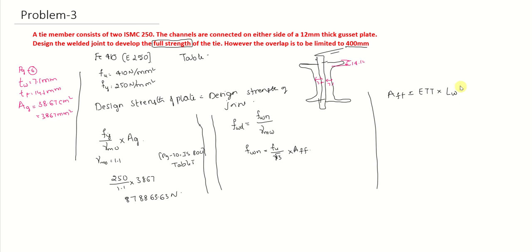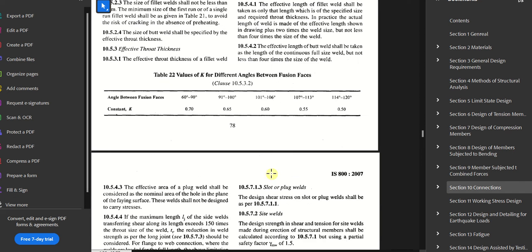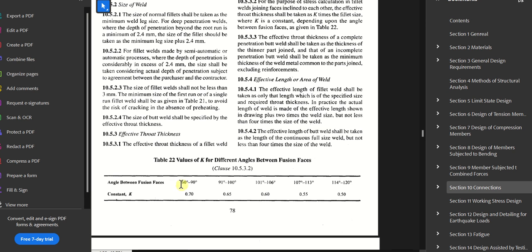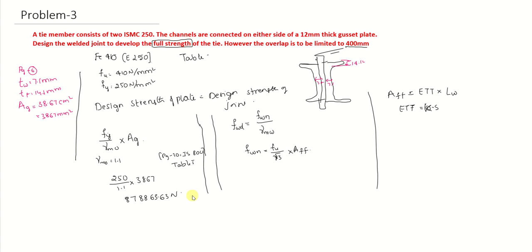Now let us find out the effective area. Effective area is effective throat thickness into the length of the joint, as we have already seen in previous questions. The unknown thing is length of the joint here. What is effective throat thickness? It's 0.7K into S. Let me show you the code book page number 72, table number 22. When the angle between the fusion phases is 60 to 90 degrees, the K value is 0.7, which means our legs are connected perpendicularly. So it is 0.7 into size of the weld.